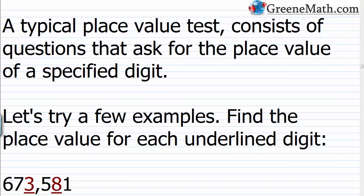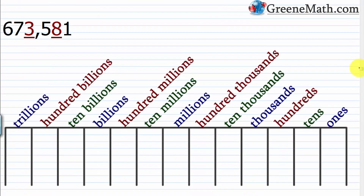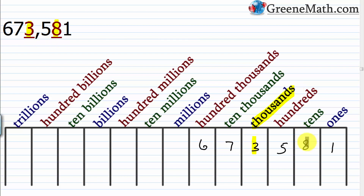A typical place value test asks for the place value of a specified digit. For 673,581 with the 8 and 3 underlined: write the number in the place value chart — 1 in ones, 8 in tens, 5 in hundreds, 3 in thousands, 7 in ten-thousands, 6 in hundred-thousands. The underlined 8 is in the tens place, and the underlined 3 is in the thousands place.